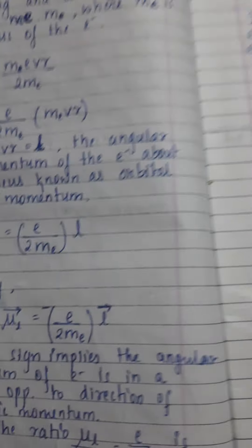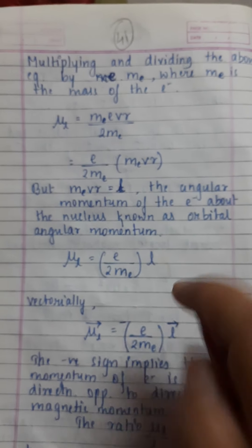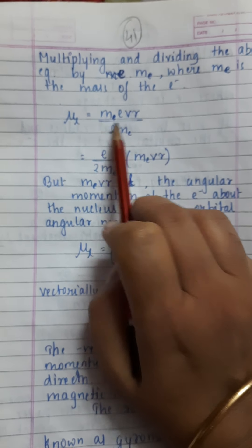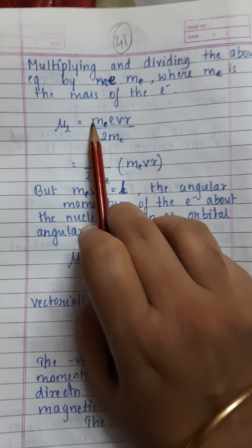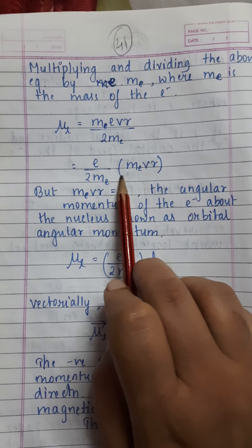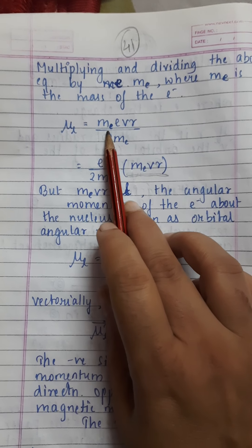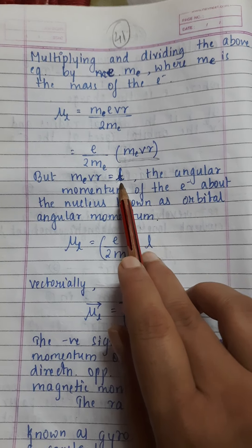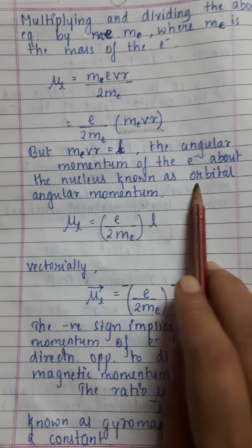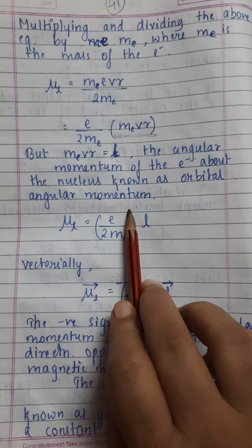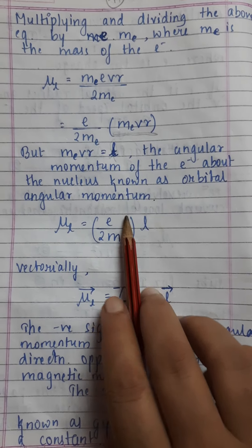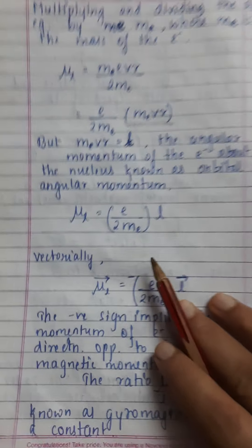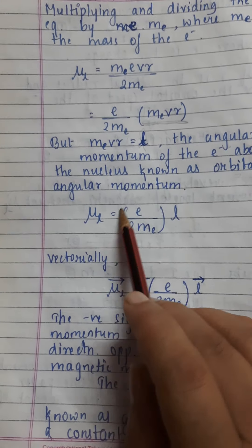Next, for μl, multiply and divide by me, where me is the mass of electron. So μl equals evr/(2me), and mevr is the angular momentum L of electron about the nucleus, known as orbital angular momentum. This concept we learned in class 11th already. The formula is μl equals e/(2me) times L.